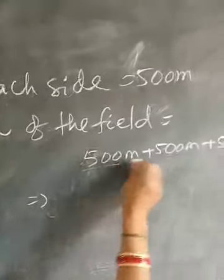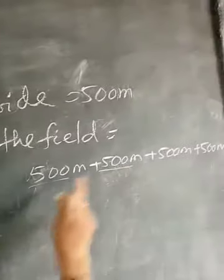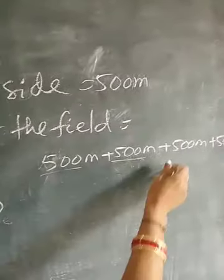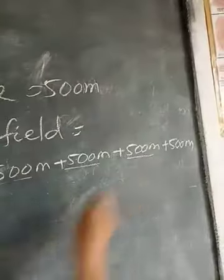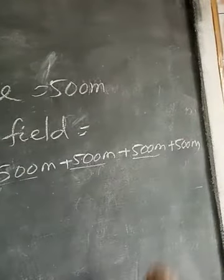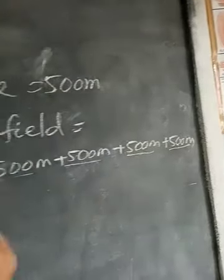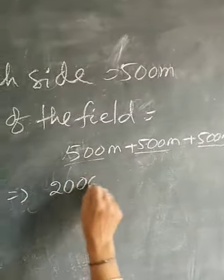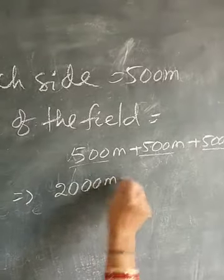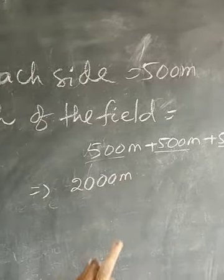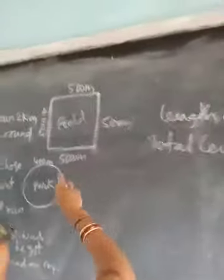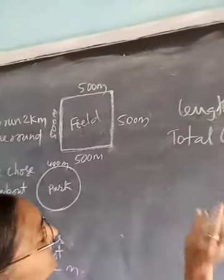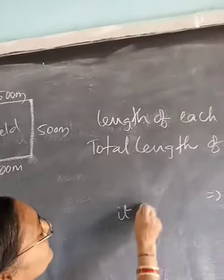500 meters plus 500 meters plus 500 meters plus 500 meters. How much will that be? 500 plus 500 is 1000; 1000 plus 500 is 1500; 1500 plus 500 is 2000 meters. That is one round — total length of the field equals one round.